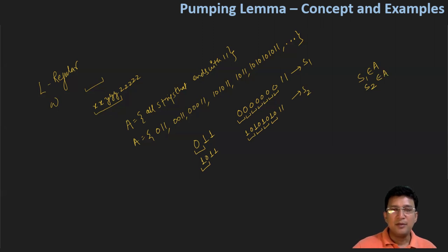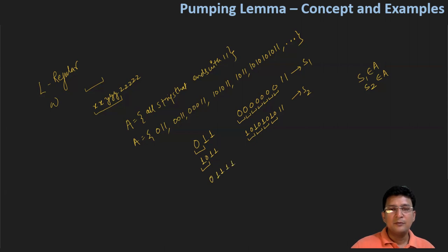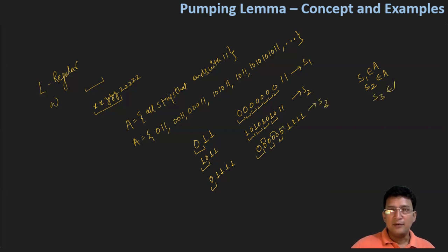So we are pumping a part of the string — either the prefix, or a string picked from the beginning, or a string somewhere in between — and repeating that part. Whatever string we get will be part of the language. For example, with zeros four times followed by 1111, if I pick the zero part and repeat it six times, then write 1111, the zero part is pumped many times. The resulting string s3 is once again part of language A.